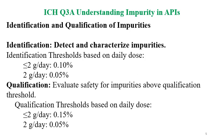ICH Q3A guideline provides understanding for identification and qualification criteria for impurities. Identification means detecting and characterizing impurities — making unidentified impurities identified by knowing their structure. Identification thresholds are based on daily dose. For drug substances with a daily dose of less than 2g per day, the identification limit is 0.1%. For drug substances with a daily dose of 2g or above, the identification threshold is 0.05%.